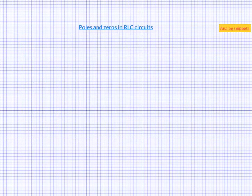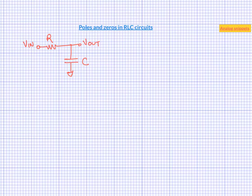So let's begin by considering the simplest possible RC circuit. This is a simple low pass filter and we know that it has one pole. But how do we know that it has one pole? A very useful rule of thumb to remember is that number of poles in a circuit is equal to number of energy storage elements it contains. There are two types of energy storage elements: capacitors and inductors. So this circuit contains only one capacitor, so there should be only one pole.